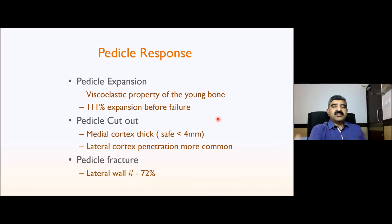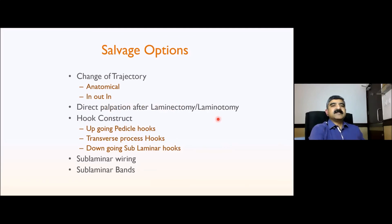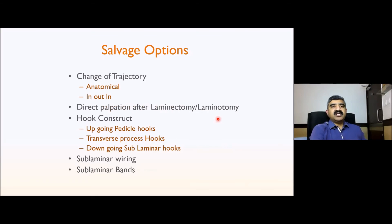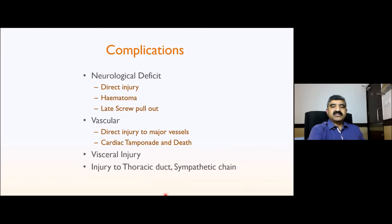The viscoelastic property of bone in the deformed spine allows pedicle expansion to 111% of normal width, so you can safely use 4.5 to 5.5 mm screws. Pedicle fracture of the lateral wall is seen in 72% of these patients. When you fail to achieve adequate placement, salvage options include changing the trajectory — if anatomical, try in-out, or vice versa — using hook constructs, sublaminar wires, or sublaminar bands.